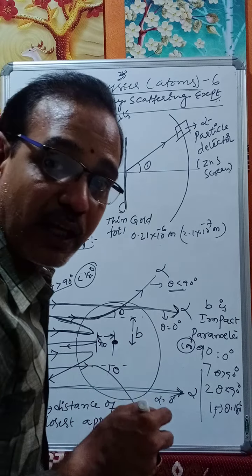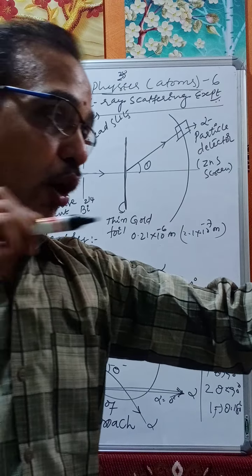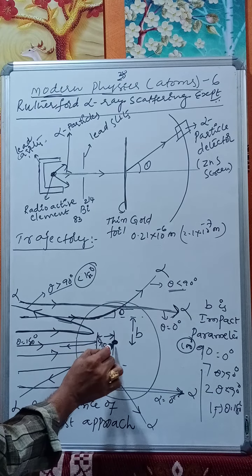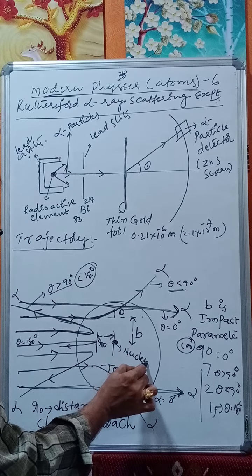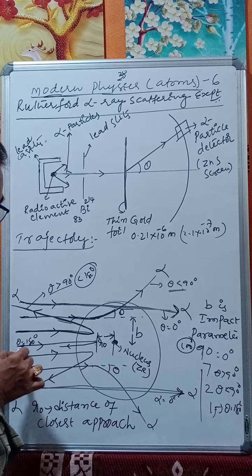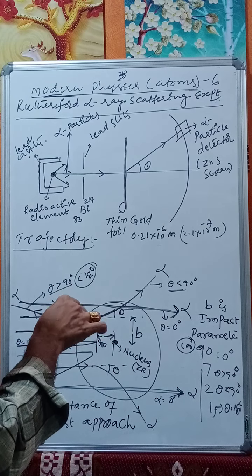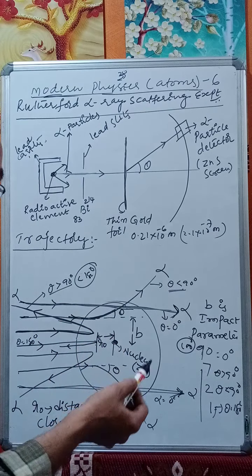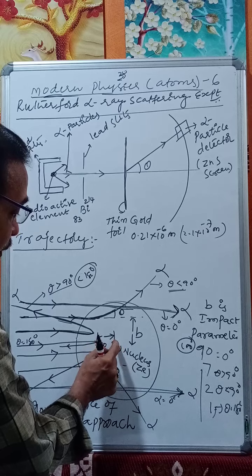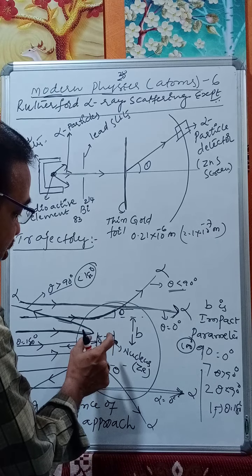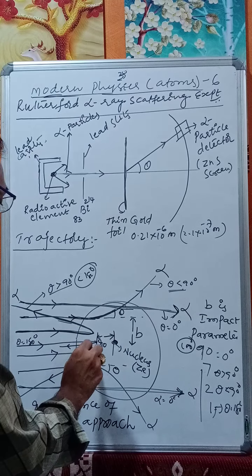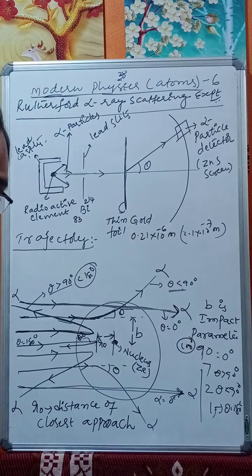The alpha particle that recoils back at 180° is the one coming straight onto the nucleus. The alpha particle carries positive charge (2e) and the nucleus also carries positive charge (Ze). Due to the repulsive Coulomb force between them, the alpha particle stops at some distance and retraces back along its path, giving a scattering angle of 180°.